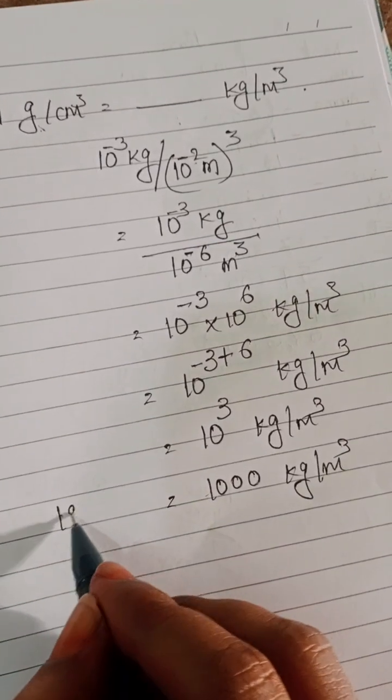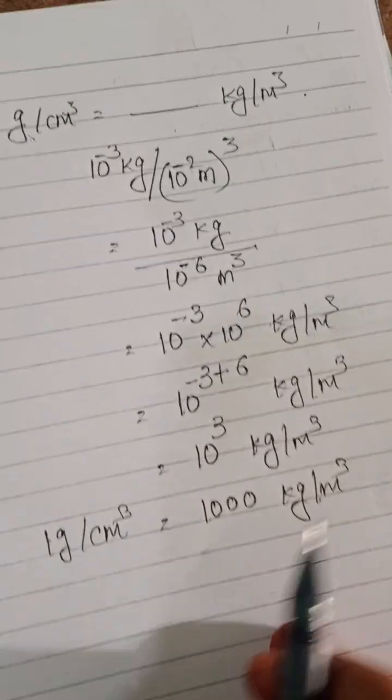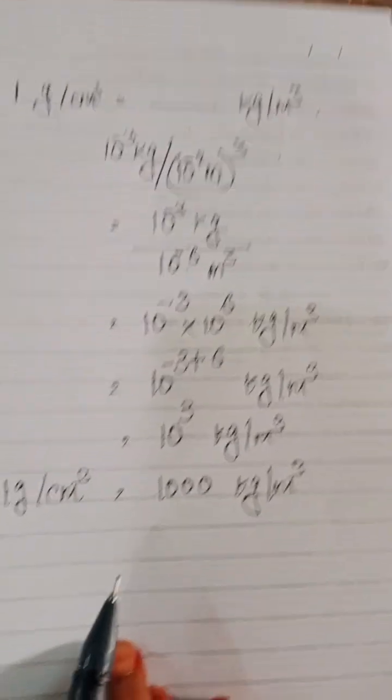So 1 gram per centimeter cube equals to 1000 kg per meter cube.